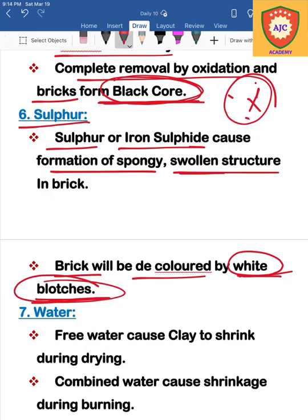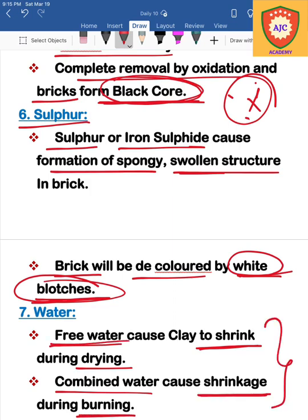Next is free water present in the bricks. Free water causes leaks and shrinkage in the bricks during the burning process. There is a difference between free water and combined water. Combined water relates to the shrinkage during burning. These are the harmful ingredients that affect the important properties of the bricks. Prepare these points for the next class.